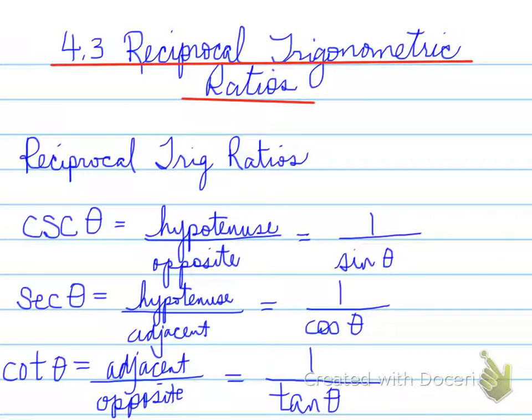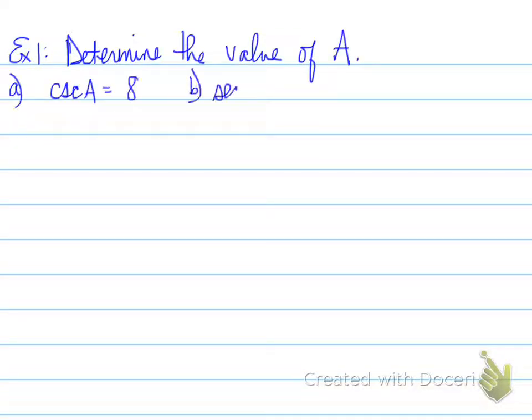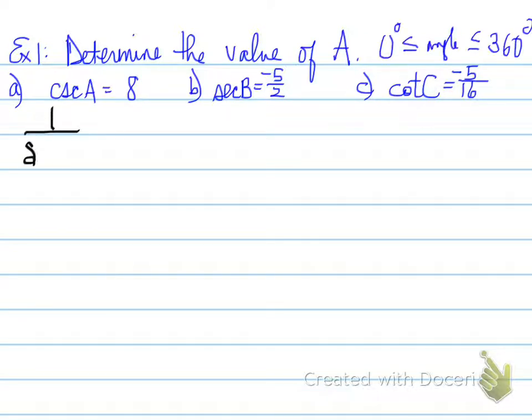What we need to do now is use this to solve problems. Example 1 says, determine the value of A such that cosecant of A equals 8, secant of B equals negative 5 over 2, and cotangent of C equals negative 5 over 16. So basically you are going to determine the value of A, B or C, so that the angle is between 0 and 360 degrees.